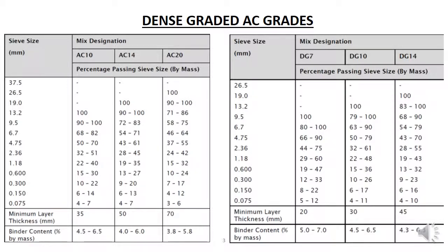AC grades are designated for medium to heavy traffic loading and are designated as AC followed by the largest aggregate size. For example, AC10 has the largest aggregate size of 10 mm as you can see in the table to the left. The table shows the mixes for AC10, AC14, and AC20 mixes which are the most commonly used. There are also AC28 and AC40 mixes for roads with heavier loadings.